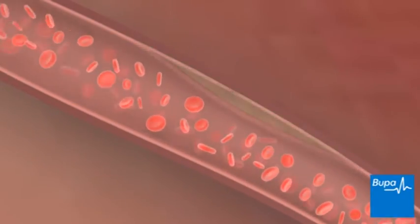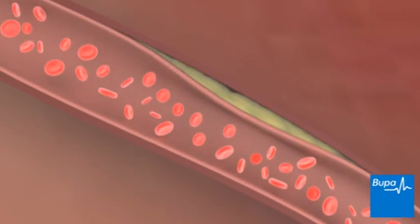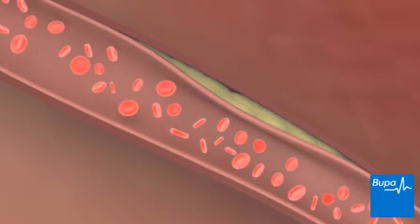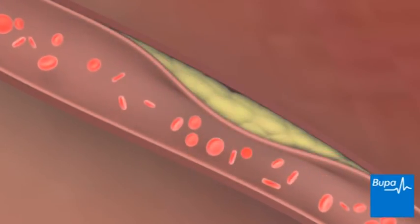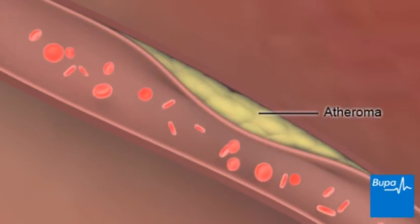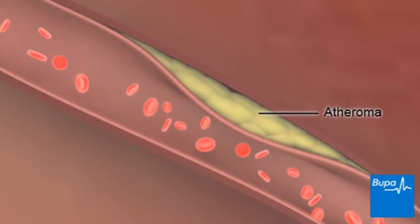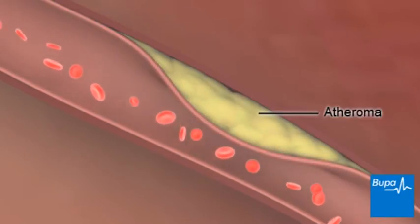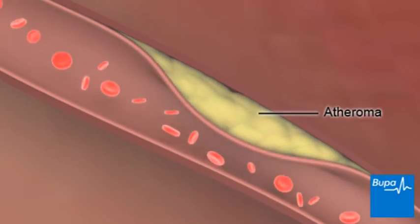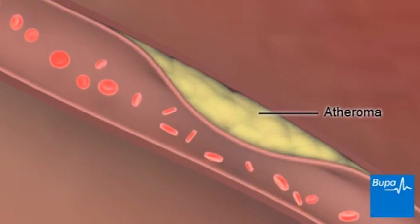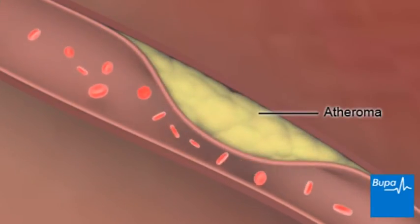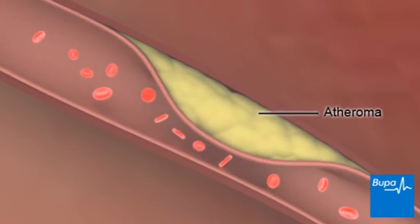Over years, fatty deposits in the blood can build up and form a plaque or atheroma on the artery wall. This can prevent the heart muscle from getting the blood and the oxygen supply that it needs.